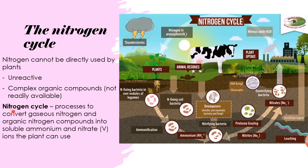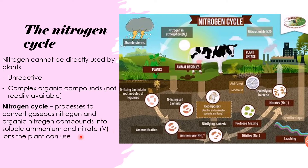The nitrogen cycle is a series of processes that convert gaseous nitrogen and organic nitrogen-containing compounds into soluble ammonium ions and nitrate(V) ions that the plant can use. It takes gaseous nitrogen and nitrogen in organic compounds in the soil and converts this nitrogen into either ammonium ions or nitrate(V) ions, which the plant can then absorb.